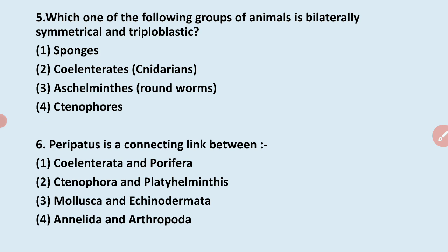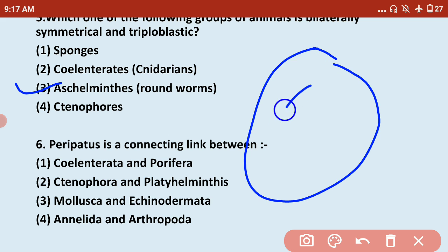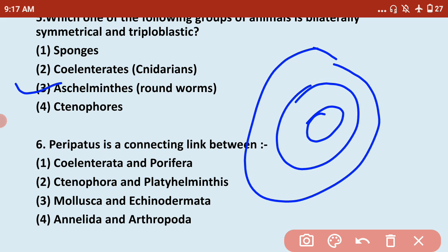Next: which group of animals is bilaterally symmetrical and triploblastic? The answer is Aschelminthes. They have bilateral symmetry and are triploblastic — they have three layers: ectoderm, endoderm, and mesoderm. However, they are pseudocoelomate because the inner and outer lining is not lined by a peritoneal layer. Due to the absence of the peritoneal layer, they are not true coelomates, so they are pseudocoelomates — but they are bilaterally symmetrical and triploblastic.